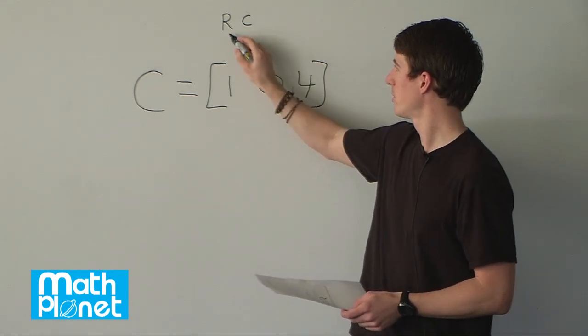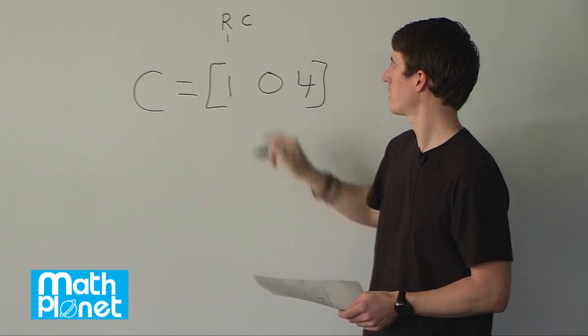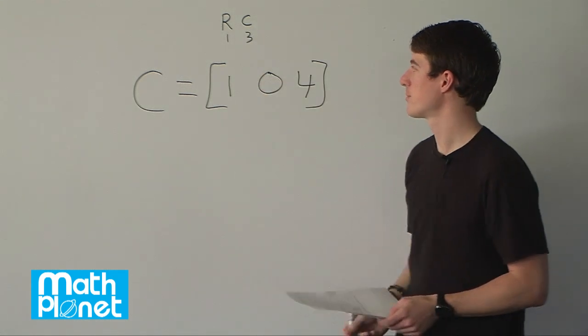So rows is one, columns is three. And that's it.